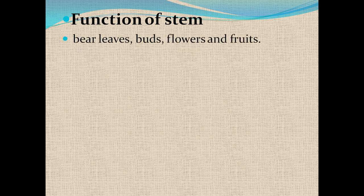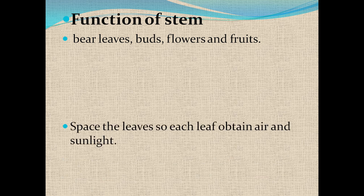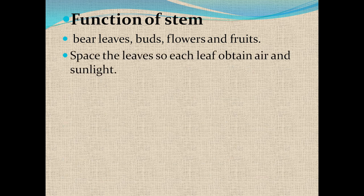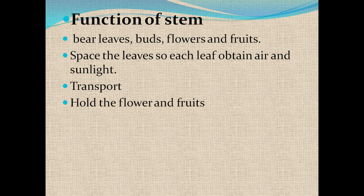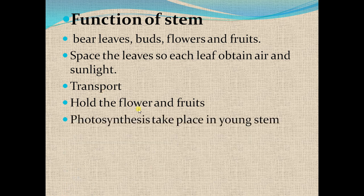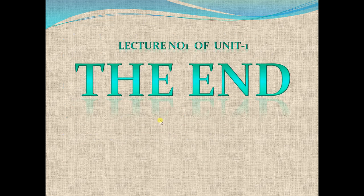Finally, the functions of the stem. The stem bears leaves, buds, flowers, and fruits. It also provides space so that each leaf can obtain air and sunlight. The stem transports water and minerals from the roots to the leaves to prepare food, and transports glucose from the leaves to all parts of the plant body. It also holds flowers and fruits. Photosynthesis takes place in the young stem. Some stems can store food, like the potato tuber. This is the end of the first lecture of Unit One. Thank you.